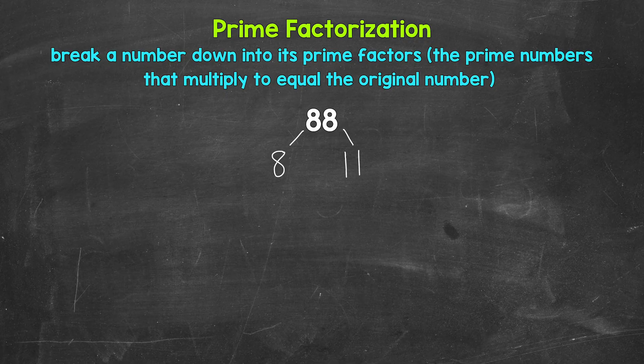Now keep in mind, there are other factors we could have started with here. For example, 4 and 22, or 2 and 44. Those other options will work as well. Depending on the number, there can be multiple different factors that we can use, so there can be multiple ways we can do these.